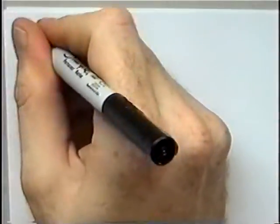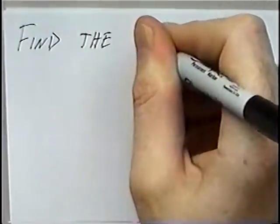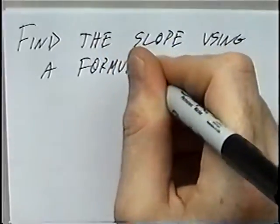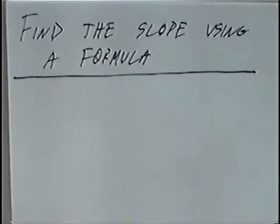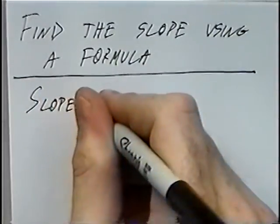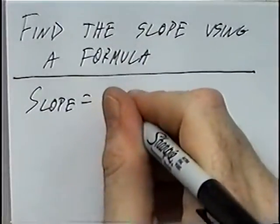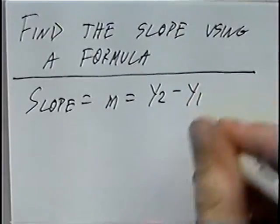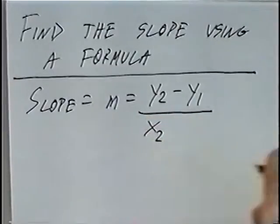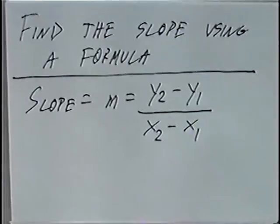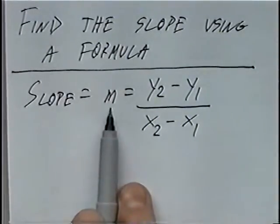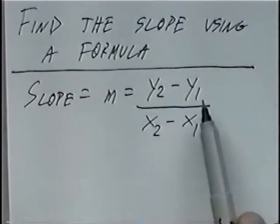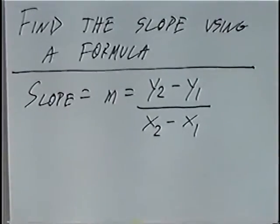The title of the last section today is Find the Slope. For this section we'll have a formula for the slope. For the slope, we'll use the letter M. So M equals Y sub 2 minus Y sub 1 divided by X sub 2 minus X sub 1. The 2 represents the second point and the 1 represents the first point. So we'll take the second Y value minus the first Y value, divided by the second X value minus the first X value.